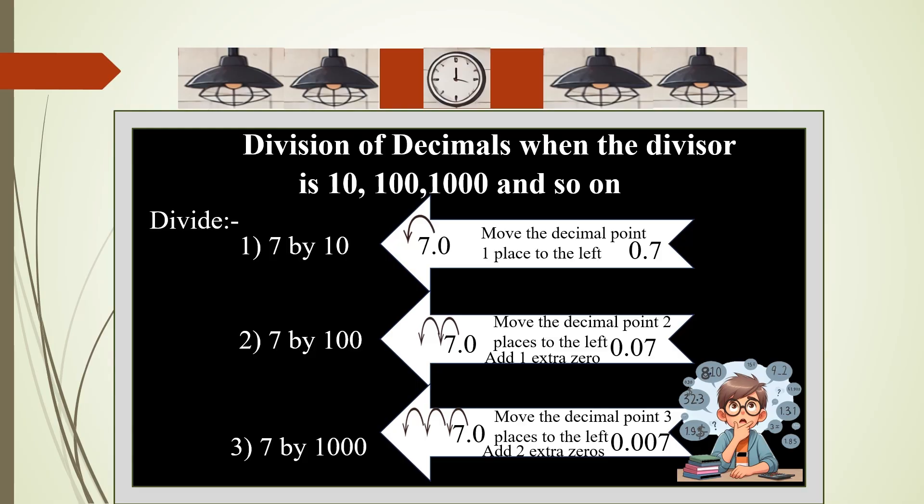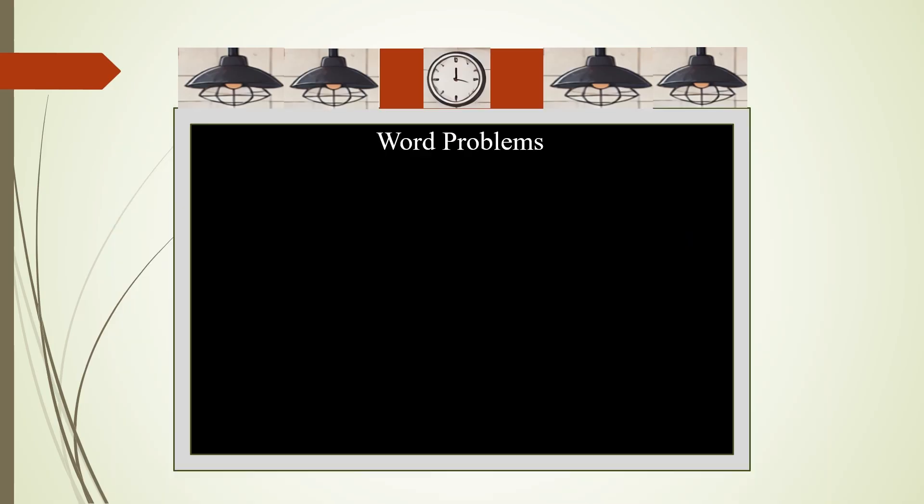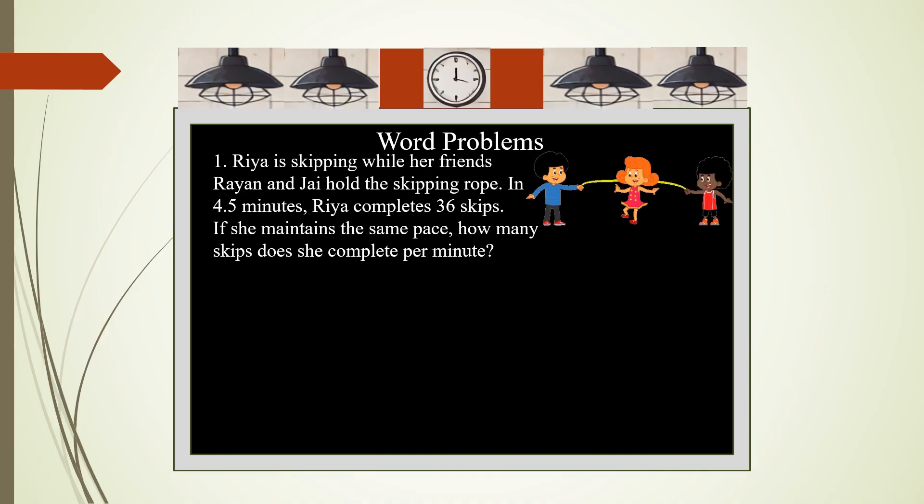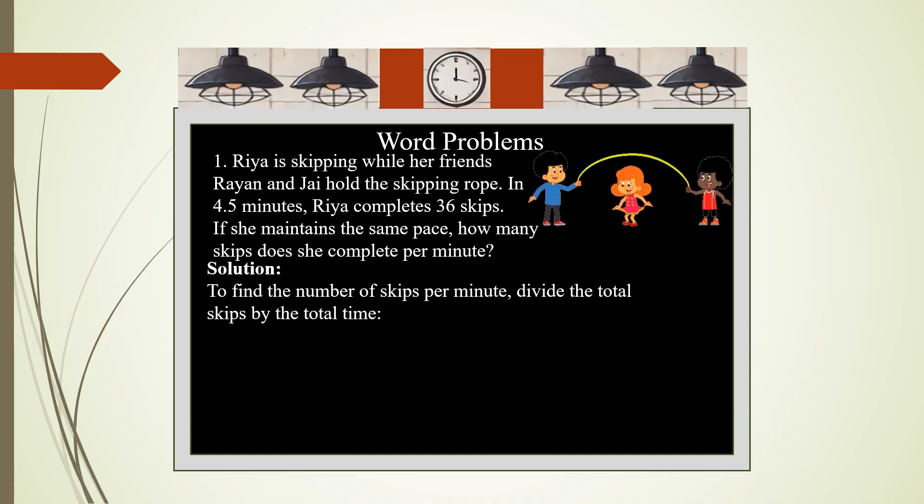Now let us try word problems. Ria is skipping while her friends Ryan and Jai hold the skipping rope. In 4.5 minutes, Ria completes 36 skips. If she maintains the same pace, how many skips does she complete per minute? To find the number of skips per minute, we have to divide the total skips by the total time: 36 divided by 4.5. 36 is the dividend and 4.5 is the divisor. It will become 45 and inside it will become 360. 45 times 8 is 360, therefore the answer is 8. So Ria completes 8 skips per minute.